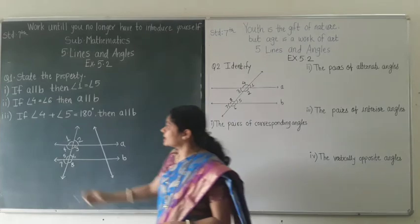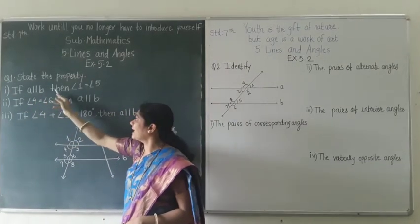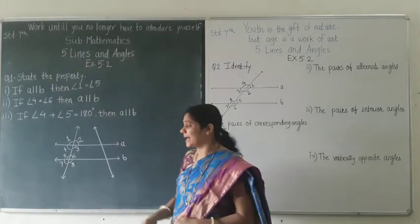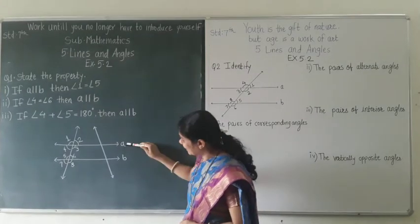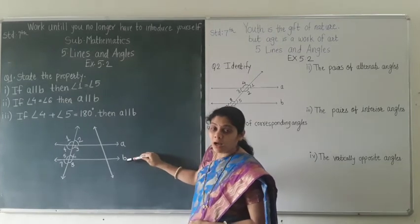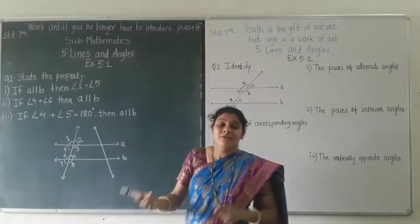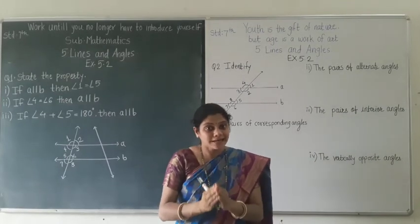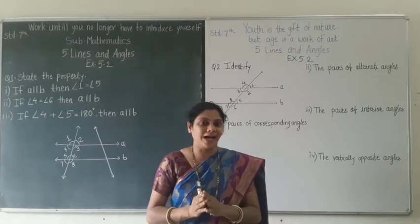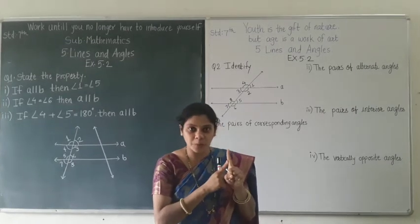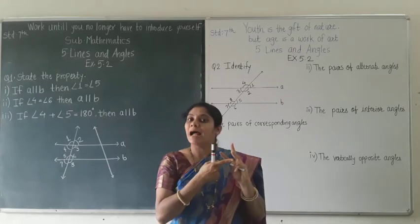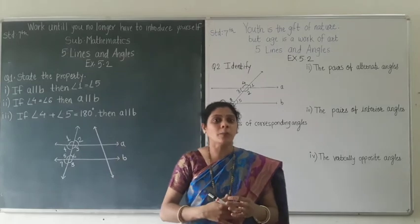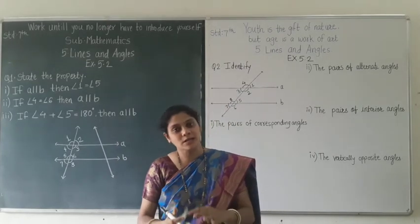The first question is: if A is parallel to B, then angle 1 is equal to angle 5. They told us that line A and line B are parallel. We have already studied that a transversal of two parallel lines makes three types of angles: the first is corresponding angle, the second is alternate angle, and the third is interior angle. Before solving, we will recall all the properties and features of these three types of angles.